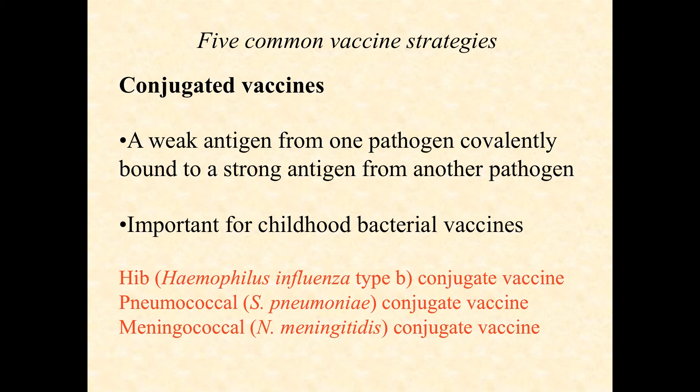T-independent antigens like polysaccharide capsules found on organisms like Haemophilus, Streptococcus, and Neisseria — those T-independent antigens are pretty ineffective at stimulating an immune response in children, whose immune systems are still developing. They don't do a good job responding to those. Adults don't do a great job either, but in kids it's almost absent.